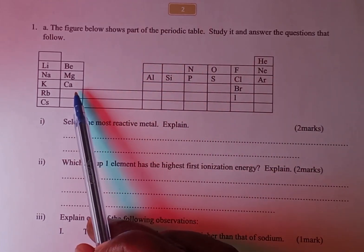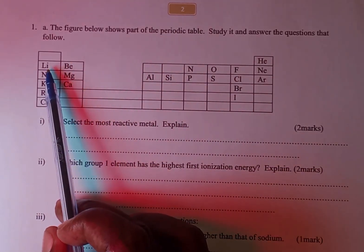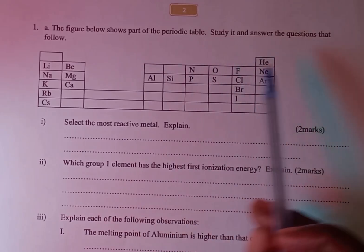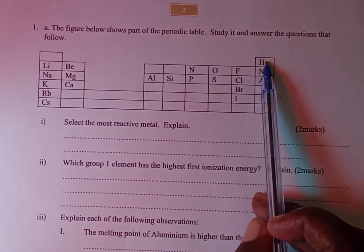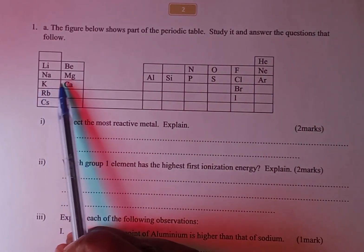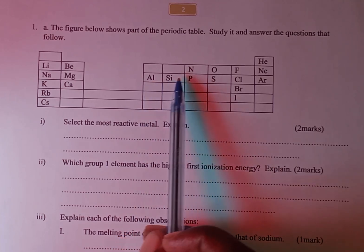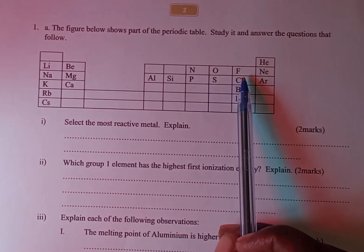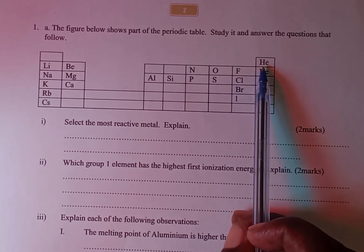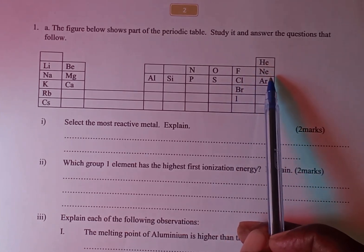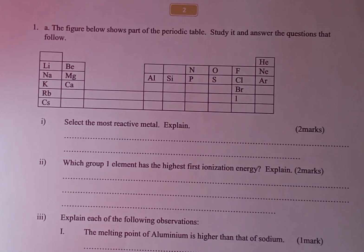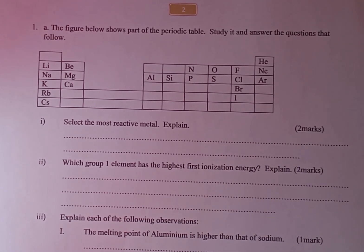We have the periodic table with elements in group 1 all the way to group 8. Remember, groups 1, 2, and 3 are metals. Then groups 4, 5, 6, and 7 are non-metals. Group 8 are noble gases. Remember, group 4 elements are metalloids — they can either lose or gain electrons in order to acquire a stable electron configuration.